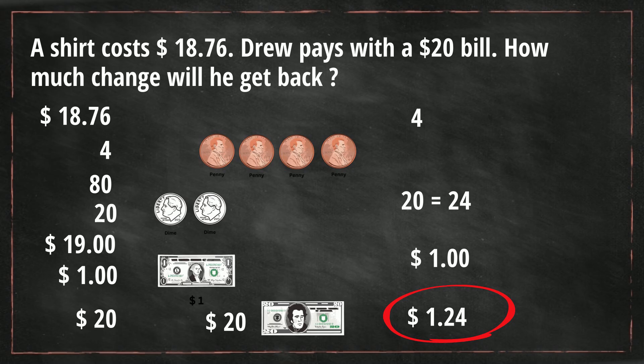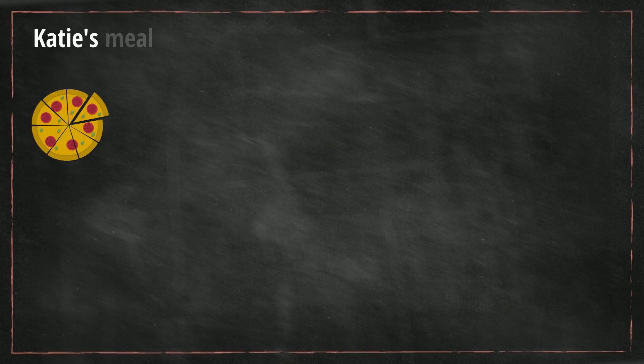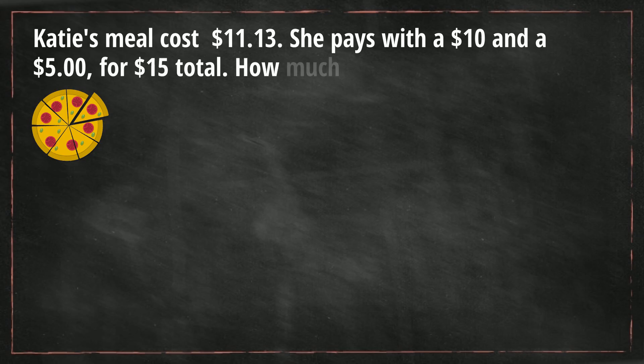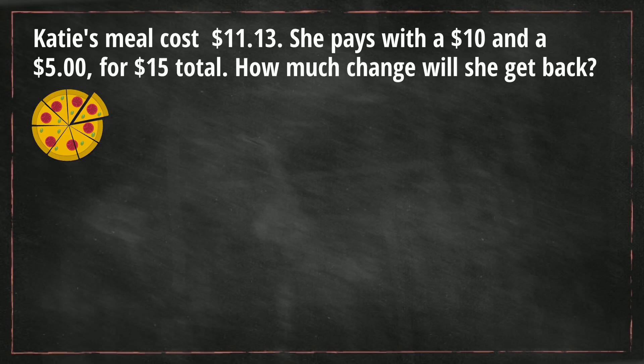Let's work another example. Katie's meal cost $11.13. She pays with a $10 and a $5 for $15 total. How much change will she get back?